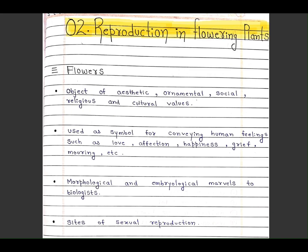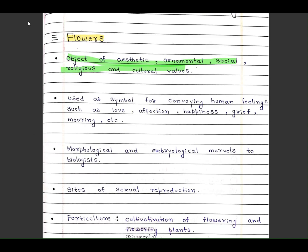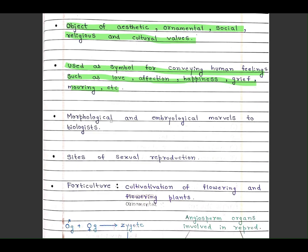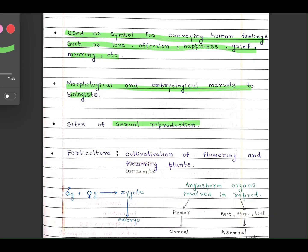At first, let's see the definition of flowers. Flower is an object of ornamental aesthetic value with religious and cultural significance. It is used as a symbol for conveying human feelings such as love, affection, happiness, grief, mourning, etc. It represents morphological and embryological marvels to biologists and is the site for sexual reproduction. Floriculture is the cultivation of flowering plants and flowers.